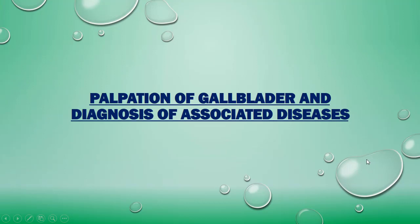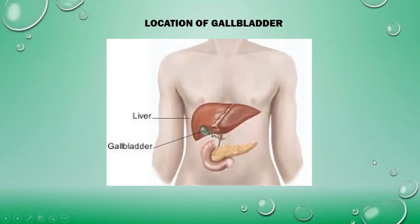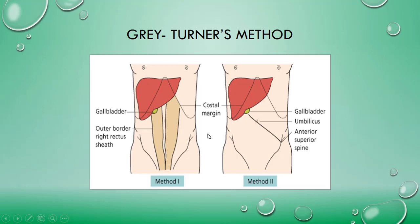Now the surface marking of the gallbladder — where exactly is its location. The gallbladder is situated at the junction of the ninth costal cartilage and the outer border of the rectus abdominis muscle. Using Gerard Bernard's method, we draw a line from the left anterior superior iliac spine through the umbilicus, and at the junction of this line with the costal margin, the gallbladder is situated.